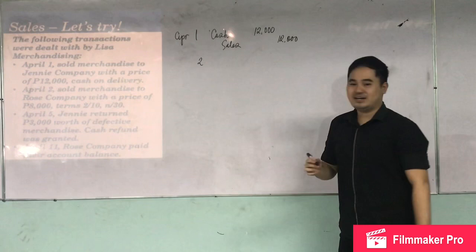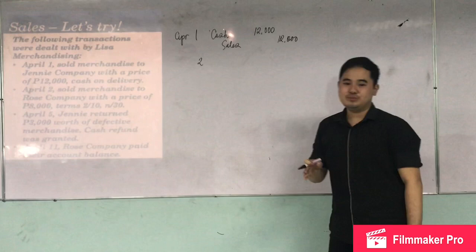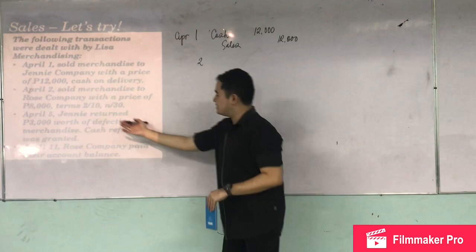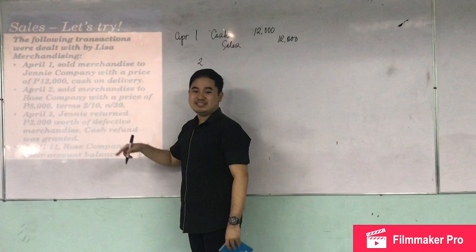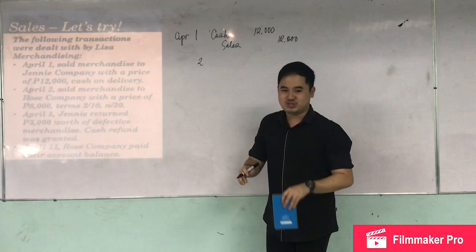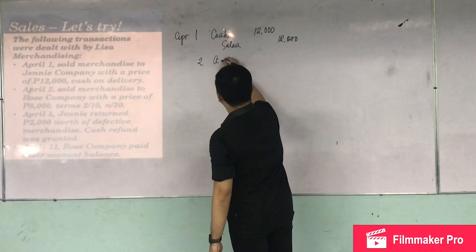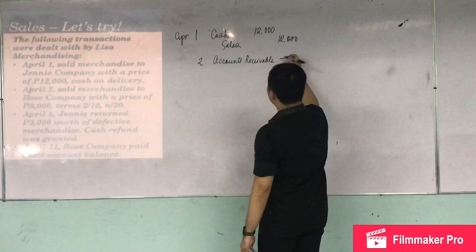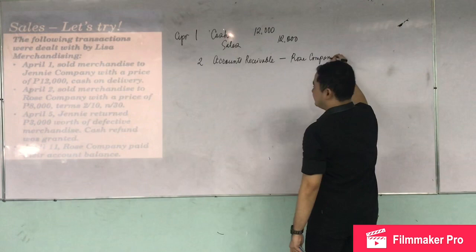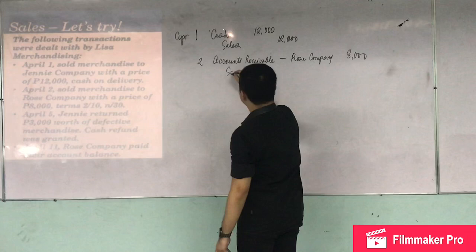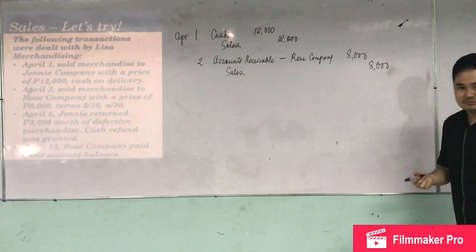On April 2, sold merchandise to Rose Company for 8,000 with terms 2/10, n/30. A two percent discount is given if the customer pays within 10 days, with full payment due in 30 days. Since payment has not yet been received, the entry is: debit Accounts Receivable — Rose Company 8,000 and credit Sales Revenue 8,000.